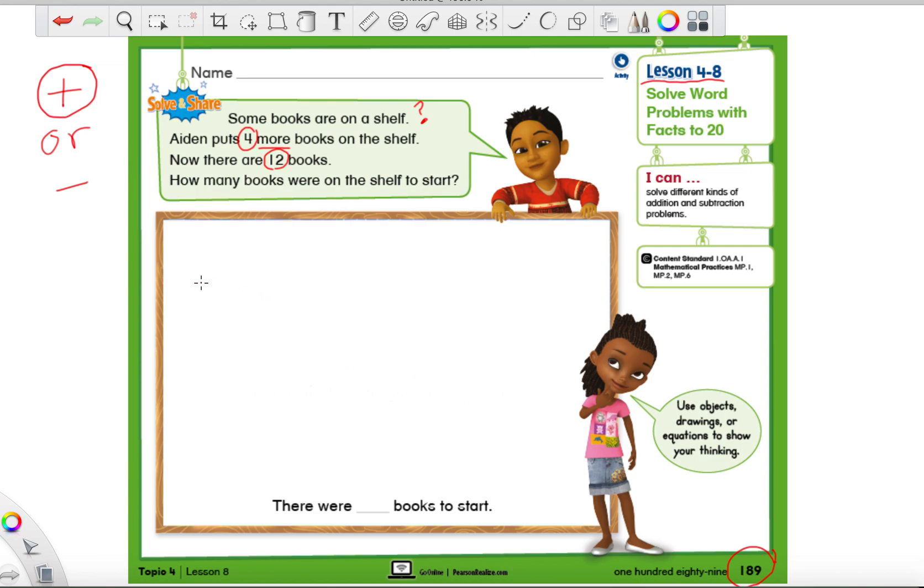When we see this word more, it's usually going to mean that we're going to be adding numbers together to make a bigger number. So if we're going to make a number sentence, we need a blank, a plus sign, a blank, our equal sign, and then a spot for our answer. We don't know how many we start off with, so we've got to leave one of these spaces blank. Then he gets four more.